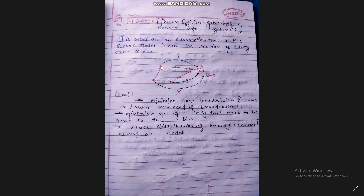Those nearby nodes then forward their data further along their range, and so on, until the data reaches the base station. In this way, all the nodes make a chain to submit their data to the base station. The goals of this algorithm are to minimize the node transmission distance, lower the overhead of broadcasting, minimize the number of messages that need to be sent to the base station, and achieve equal distribution of energy consumption across all nodes.